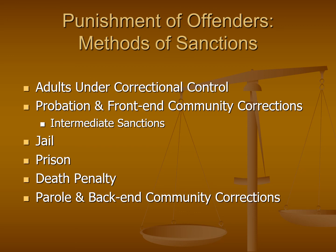We will then proceed into looking at various types of punishment. We'll start with what are known as community-based sanctions or community corrections, which include things like probation and intermediate sanctions. We'll then move into the two classic forms of incarceration by looking briefly at jails and prisons. We'll then look at the death penalty, otherwise known as capital punishment, and finish with the back end of community corrections, which includes parole.